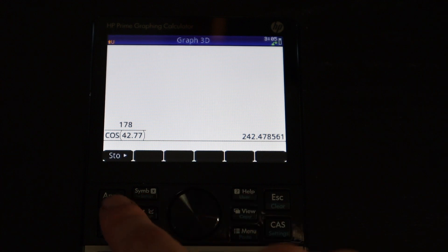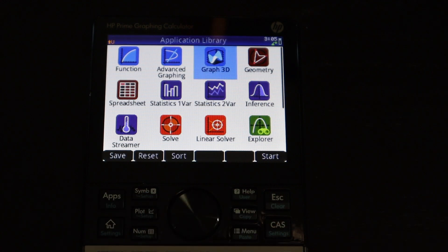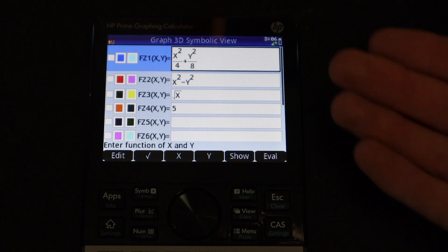So all you have to do to get to the graphing app is just press the Apps button, and then go to Graph 3D right there. And then you'll be taken to this screen.